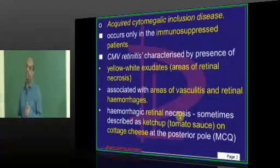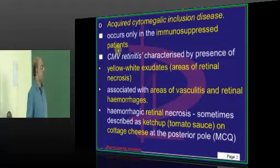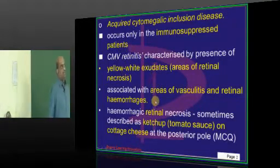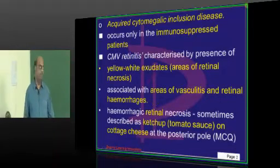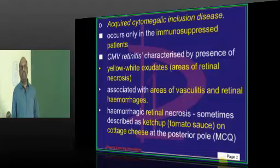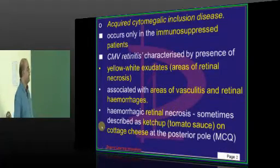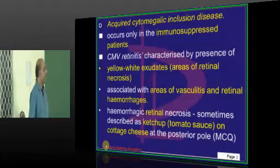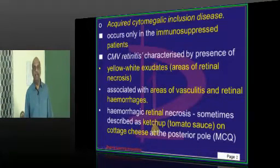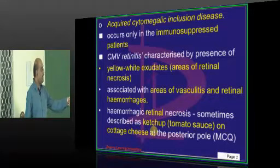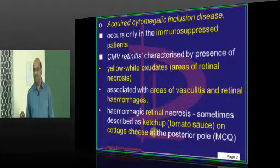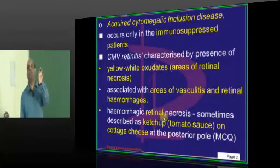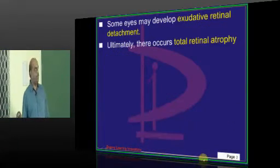Acquired CMV is seen in immunocompromised individuals - HIV positive individuals or anyone who is immunocompromised for whatever reason. How do you recognize CMV retinitis? There are exudates in areas of retinal necrosis, and there will be areas of vasculitis and retinal hemorrhage. It is typically described as tomato ketchup on a cottage cheese retinopathy. This tomato ketchup appearance is seen in the posterior pole of the retina.